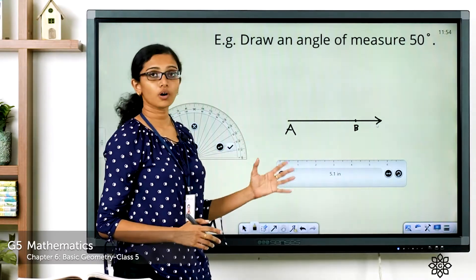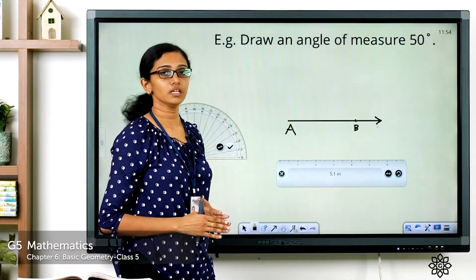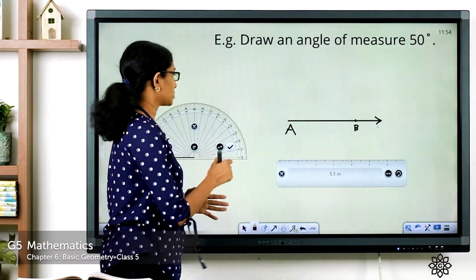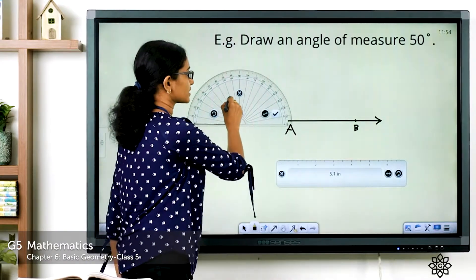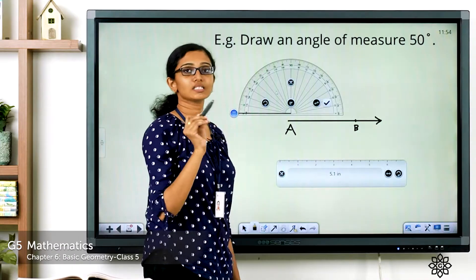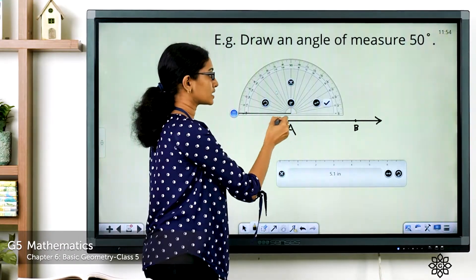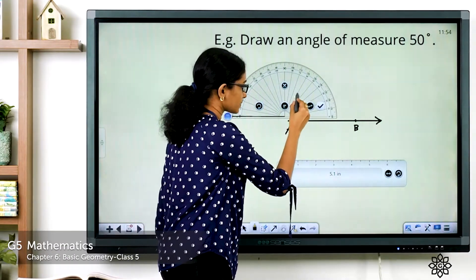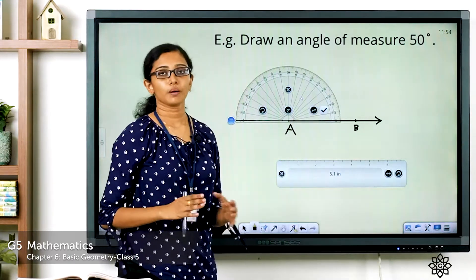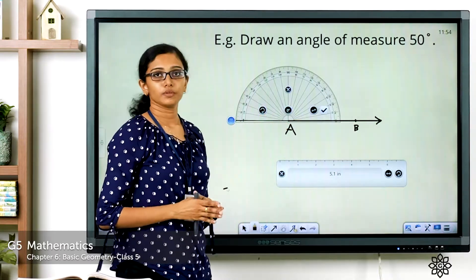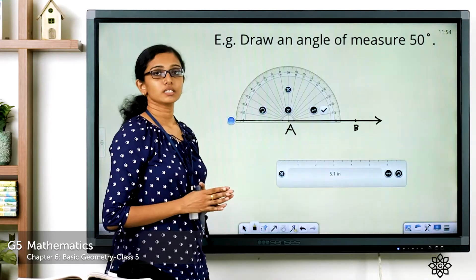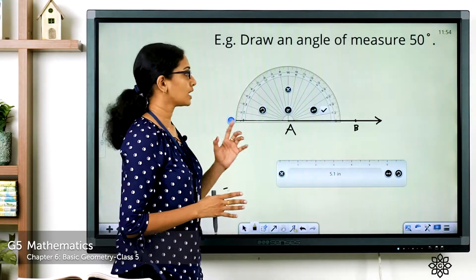Now that we have drawn the lower arm of the angle, let's use the protractor to take the required measurement. Place the protractor such that the baseline coincides with the lower arm and the center of the protractor coincides with the starting point of the ray.